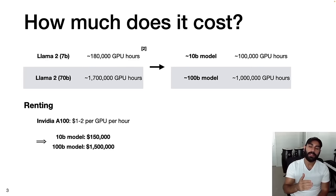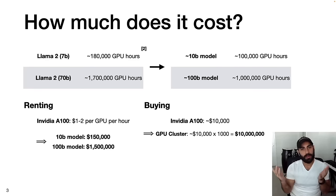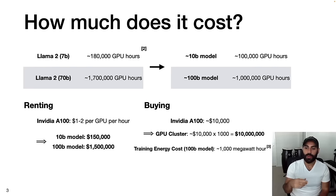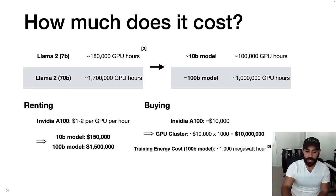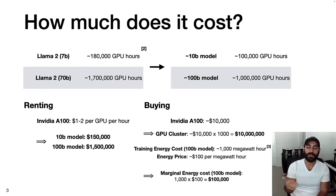Alternatively, instead of renting the compute, you can buy the hardware. An A100 is about $10,000, and if you want to form a GPU cluster of about 1,000 GPUs, the hardware costs alone are on the order of $10 million. But that's not the only cost — when you're running a cluster like this for weeks, it consumes a tremendous amount of energy. Let's say training a 100 billion parameter model consumes about 1,000 megawatt hours of energy, and the price of energy is about $100 per megawatt hour — that means the marginal energy cost of training a 100 billion parameter model is on the order of $100,000.